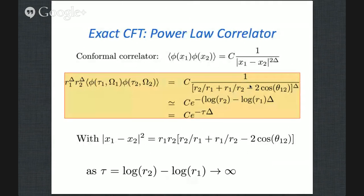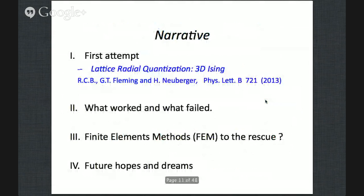A propagator in a conformal field theory is simply a power with a funny exponent called the dimension. When you go to radial coordinates, you take a correlator, pull out the extra factors of R — that's the rescaling of the fields. Once you do that, you see it's exponential in the log, and what used to be called energies are actually dimensions. By the way, all conformal field theorists call them energy just to make sure you don't understand what they're saying. So we are measuring correlators which are exponentially falling, directly giving the dimensions.